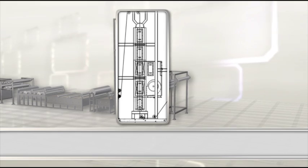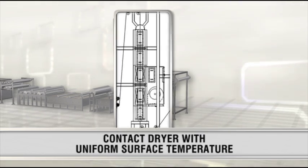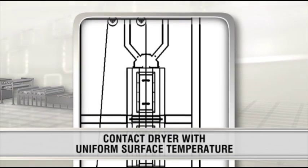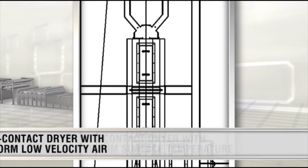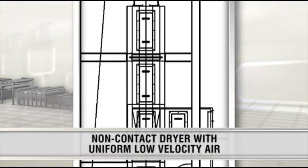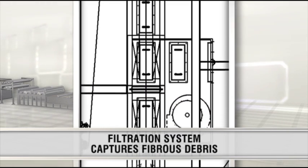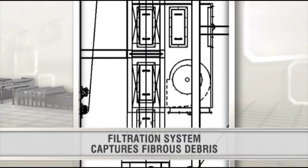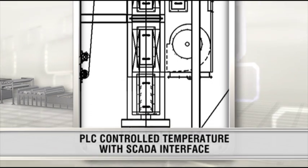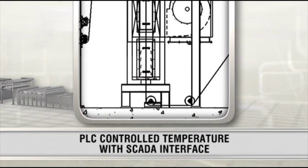Following surface treatment, the fiber is dried through a contact dryer with a uniform surface temperature. After sizing, a non-contact dryer delivers uniform low-velocity airflow with a filtration system to capture fibrous debris. Temperature for both dryers is controlled by a PLC with a SCADA interface.